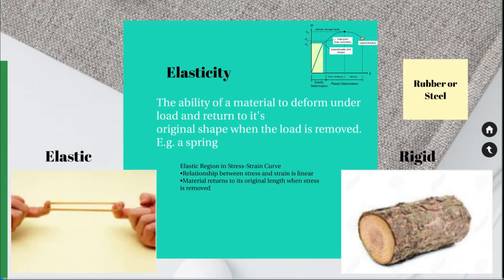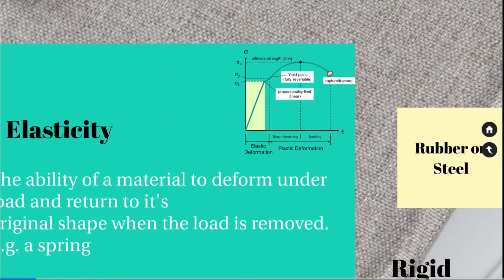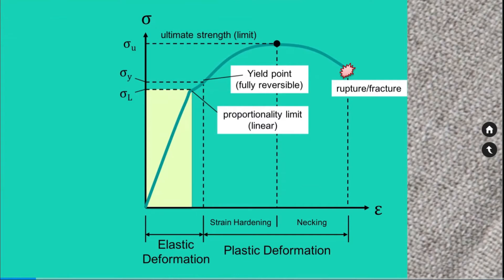If you take an example of a spring, when you apply force the spring will deform. When you remove the force, the spring will return to its original shape. From the stress-strain diagram, we can understand that stress is directly proportional to strain during the elastic region, represented as a straight line, because most engineering materials display linear behavior within this elastic region. That means the amount of deformation is directly proportional to the amount of load acting on a material in this elastic region.